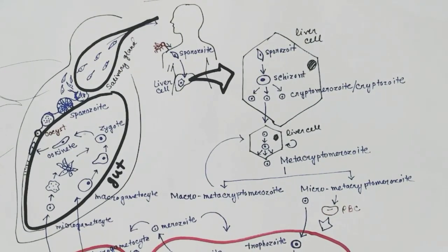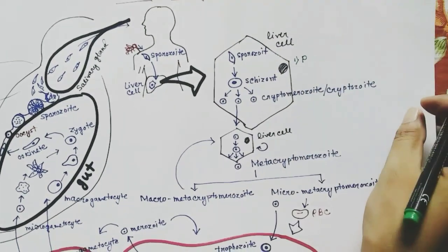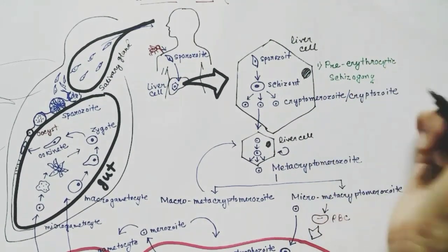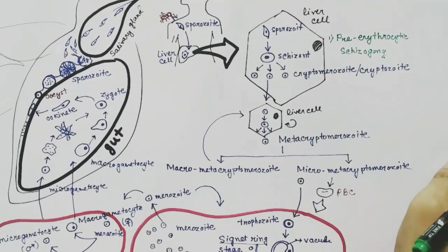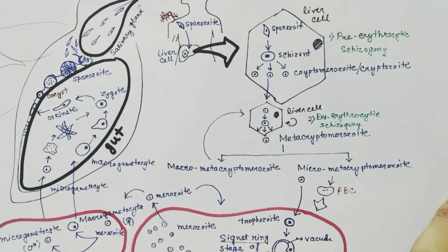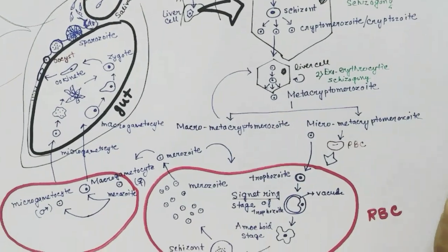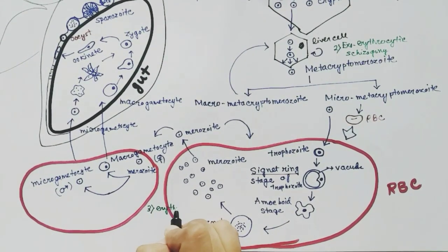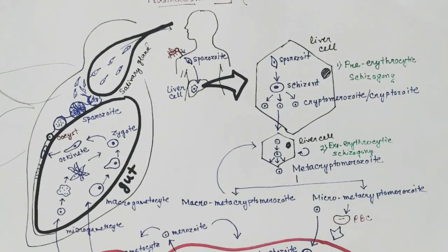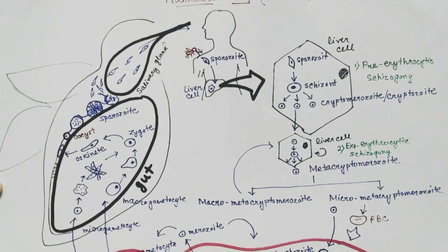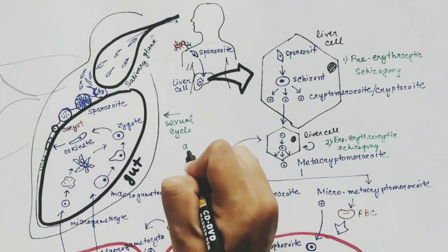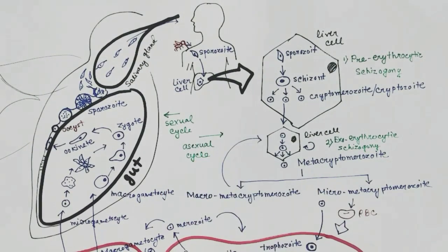There are a few stages where schizogony has occurred. In the first liver cell, the schizogony is called pre-erythrocytic schizogony. In the next liver cells, this asexual reproduction is called exo-erythrocytic schizogony. One more schizogony occurs inside the red blood cell, called erythrocytic schizogony. In the life cycle of Plasmodium vivax, the sexual reproduction cycle occurs inside the body of the mosquito, while the asexual cycle occurs in the body of the human.